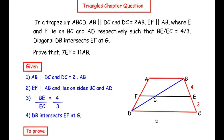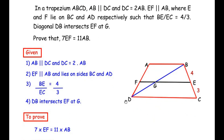It is given that DB is a diagonal that intersects EF at point G. We have to prove that 7 times EF is equal to 11 times AB, so our focus is on EF and AB. Let us begin with the proof now.